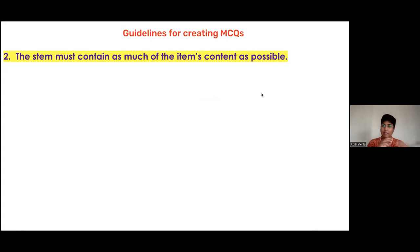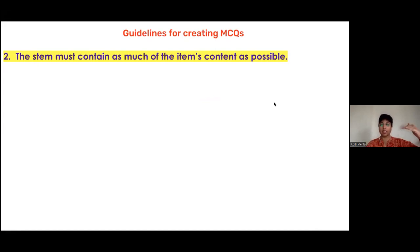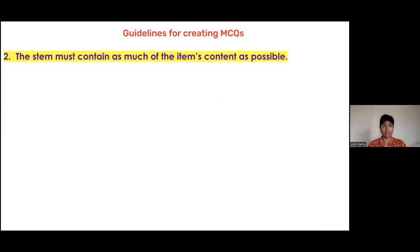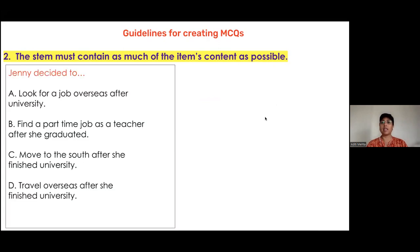Rule two, related to the first: the stem must contain as much of the item's content as possible. The test item is everything — the question statement, the key, and the distractors. If you look at this box on screen, the stem reads 'Jenny decided to.' The question is not clear in the stem.